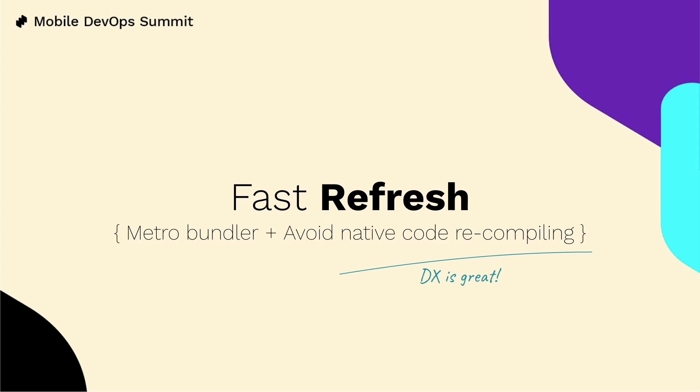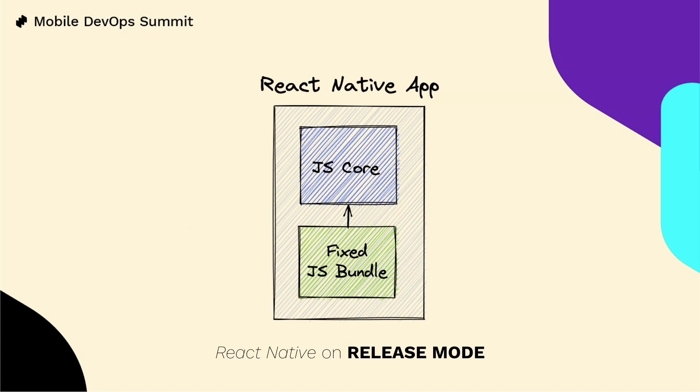What about React Native apps beyond dev mode? For apps in release mode, instead of fetching the JS bundle at runtime, this bundle is generated as part of the build process and included in your app package, so the JS core can consume it directly from there. We could say the JS bundle is fixed — it doesn't change over time like it does in dev mode. This is basically one of the biggest differences between a React Native app in development versus release mode: for dev mode the JS bundle is generated at runtime, for release mode it's generated at build time.